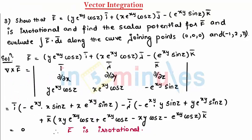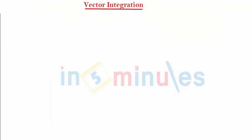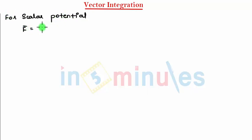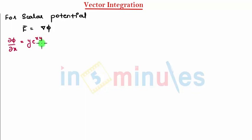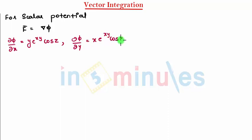Now we need to find the scalar potential. Let's start with scalar potential. For scalar potential, I need to consider F̄ = ∇φ. We need to expand this, and from here I get: ∂φ/∂x = y·e^(xy)·cos(z), ∂φ/∂y = x·e^(xy)·cos(z).